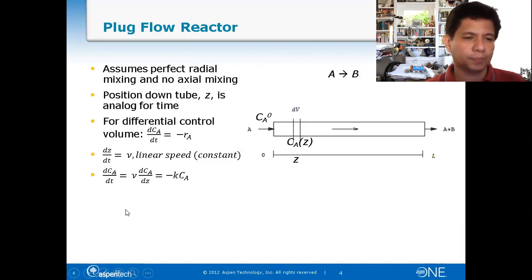Z here is the length. As you can see, this is the length of the pipe. As the reactant moves, the concentration of reactant generally decreases along the length of the tube. This is dZ/dt equals v, which is the linear speed. If you isolate dt here, dt equals dZ/dv. Then you have another equation: dCA/dt equals negative kCA.